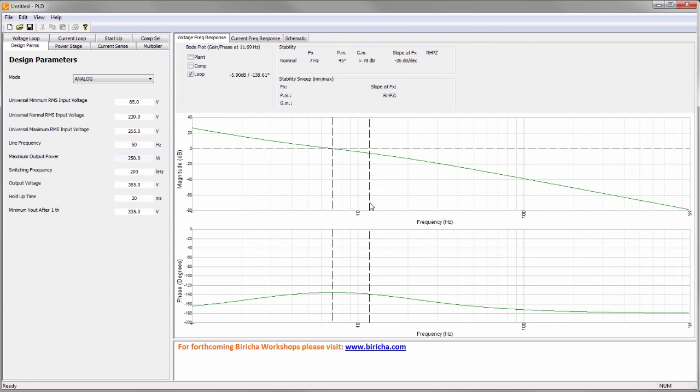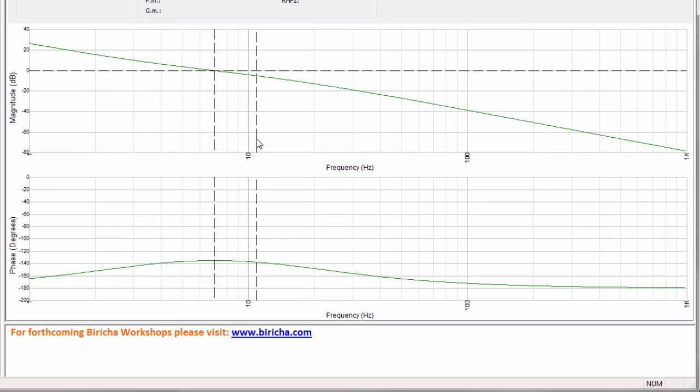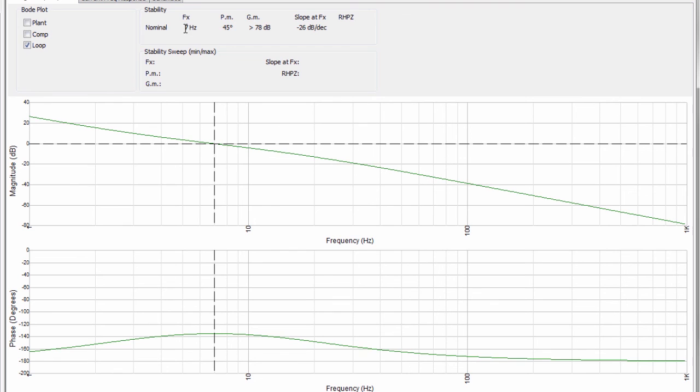I'm looking at the Bode plot, the simulated Bode plot of the voltage loop and you can see that what PLD has designed is fitting with the stability criteria quite beautifully. It shallows the gain, it crosses at 7 Hertz exactly where I wanted and at 7 Hertz I've got a phase margin of 45 degrees which is what I wanted to design.